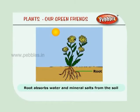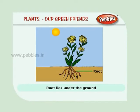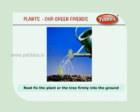Root absorbs water and mineral salts from the soil. Root is a very important part of a plant. Root lies under the ground. Root fixes the plant or the tree firmly into the ground. They bind the soil and hold the plant in place.